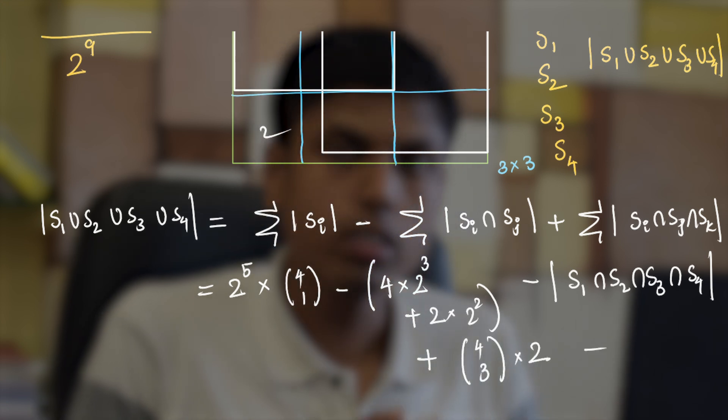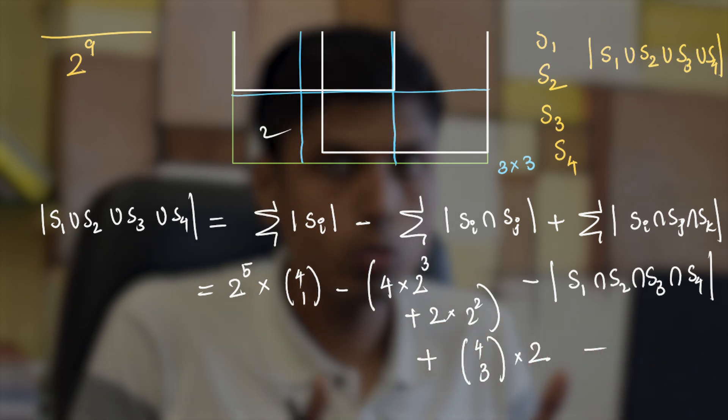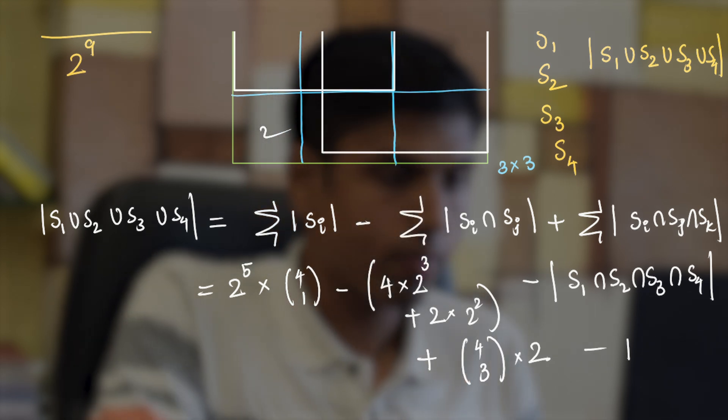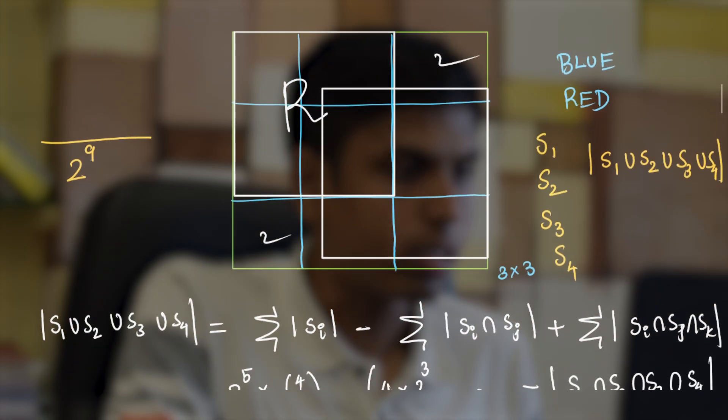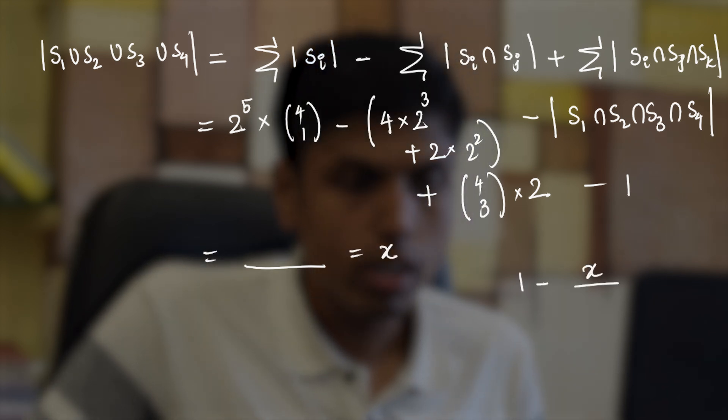Minus the cardinality of intersection of all the sets which is essentially all unit squares being red and that has only one possible configuration. When you simplify this you will get the required answer and that, let's call it x. So the actual answer would then be 1 minus x by 2 to the power 9. So this will be the actual answer. So comment your answer that you get for this problem in the comment section. The board work will be available in the description. Thank you for watching, we will meet in the next video. Bye.